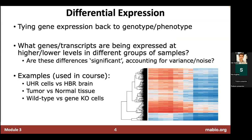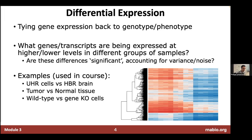There are an infinite number of examples of differential expression questions you could ask. In this course, we're asking: are the UHR cells different from the HBR brain cells? Are the HTC 1395 tumor cell line samples different from the normals? In the integrated assignments, we're asking are the wild type cells different from knockout cells or shRNA knockdown cells. These are simple comparisons, but you may have more complicated experiments in your own research, and the general idea of differential expression applies.